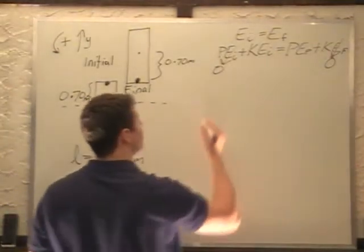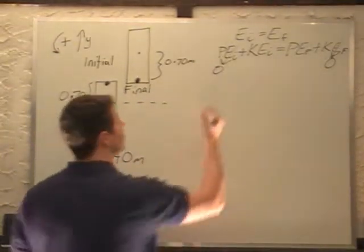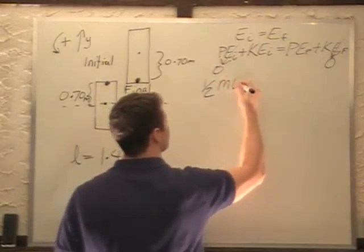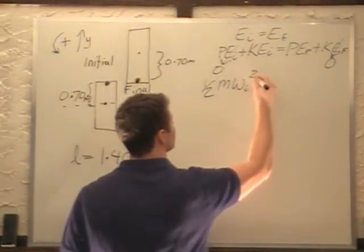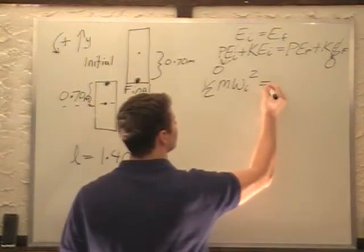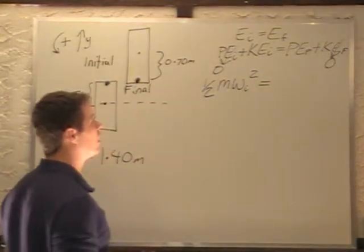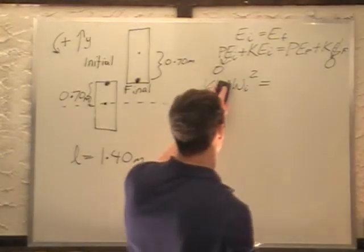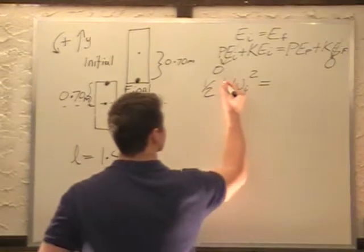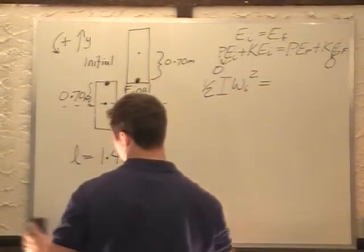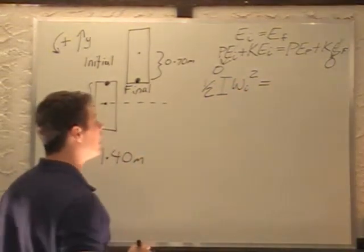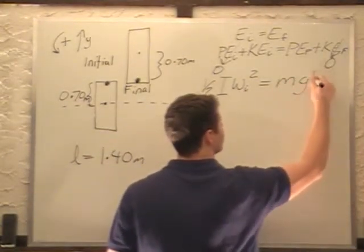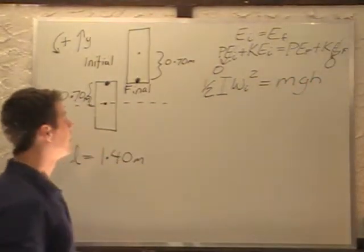Kinetic energy for a rotational system is one-half I omega initial squared, not m, that's I. A rotational system, it's not mass we use, it's moment of inertia. And then we have mgh for potential energy.